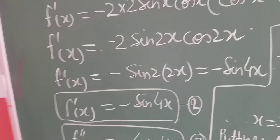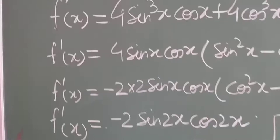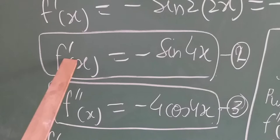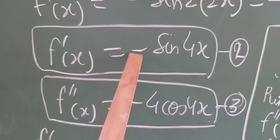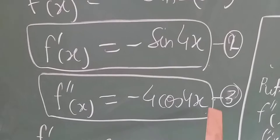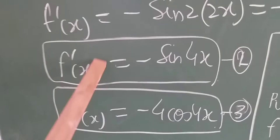We are going to find the points of local maxima and local minima by the help of the second order derivative test. So now we find the second order derivative: f''(x) = −4cos4x — call this equation 3. To find the point of local maxima or local minima we put the first order derivative equal to zero, so f'(x) = 0.